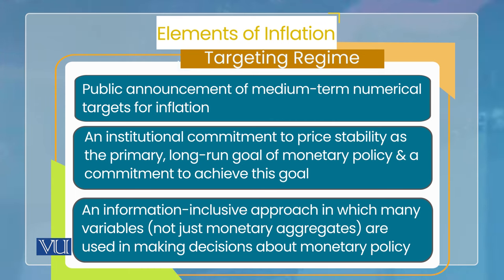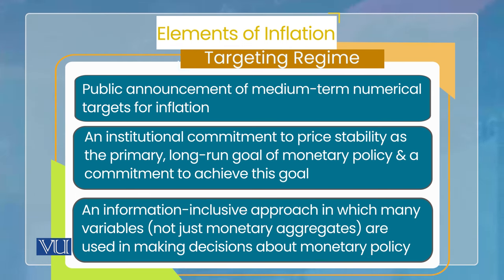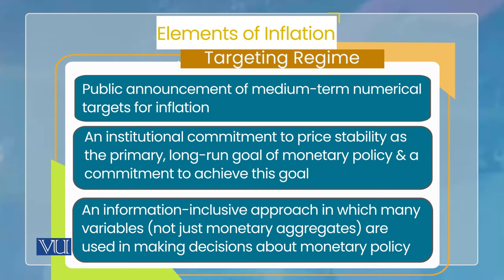تیسرا element یہ ہے کہ policy کسی ایک variable پر نہیں بنانی — جیسے صرف money یا صرف interest rate پر نہیں — بلکہ یہ ایک information-inclusive approach ہے۔ اس میں آپ different variables کی base پر inflation کو forecast کرتے ہیں، پھر دیکھتے ہیں کہ inflation forecast آپ کے target سے deviate کر رہا ہے یا نہیں، اور اس forecasting کے لیے مختلف variables کی information use کی جاتی ہے۔